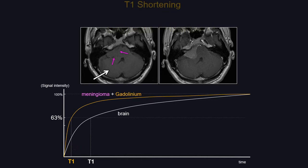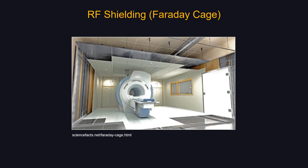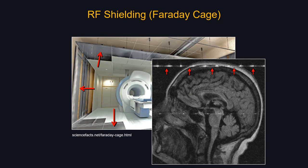Why do we call it an RF pulse? It's in the same wavelength as radio waves. That's why when you construct a new MRI suite, you put in a Faraday cage or RF shielding to block out unwanted external radio waves. If you don't have good RF shielding — due to a defect or an improperly sealed door — you will get a zipper artifact. Another common cause is interference from electronic monitoring equipment brought in with a patient.